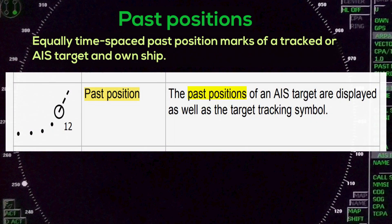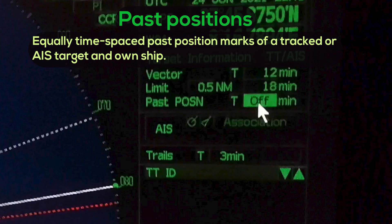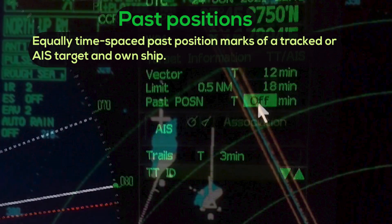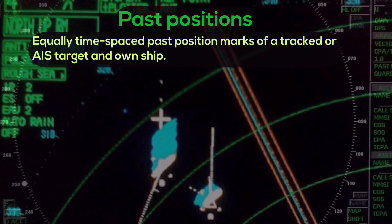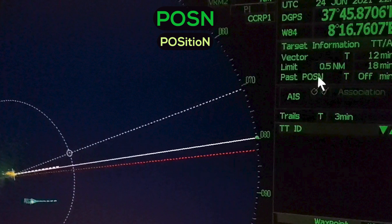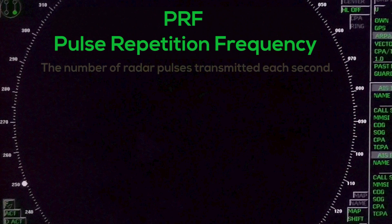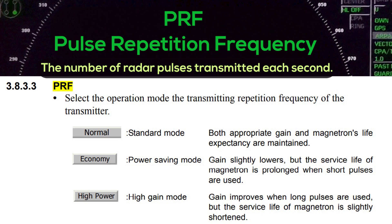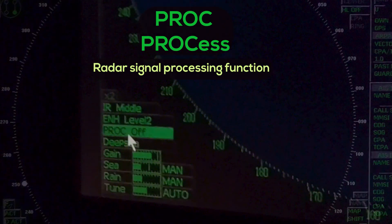Pass Positions: Equally time-spaced pass position marks of a track or AIS target and own ship. P.O.S.N — Position. PRF — Pulse Repetition Frequencies: the number of radar pulses transmitted each second. Proc — Process: radar signal processing function.